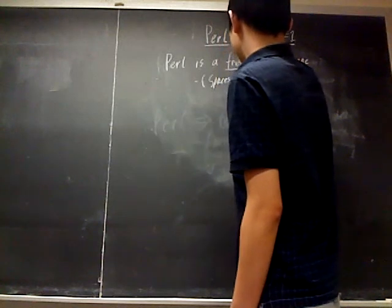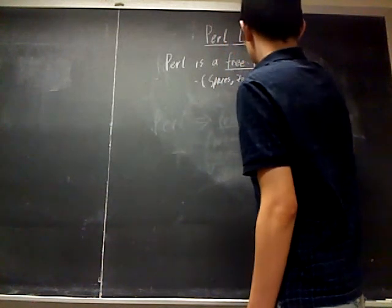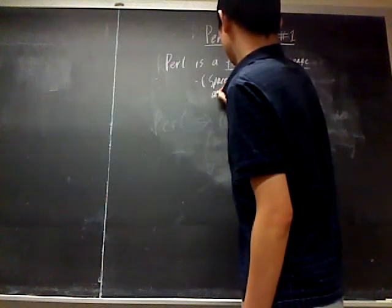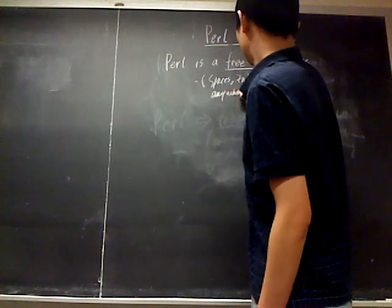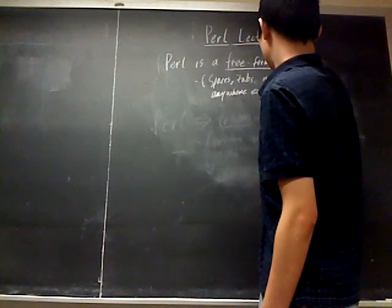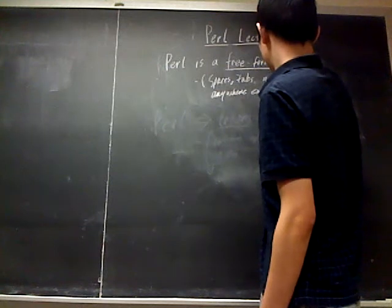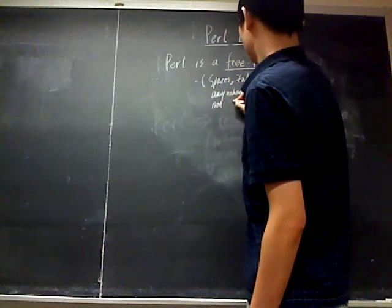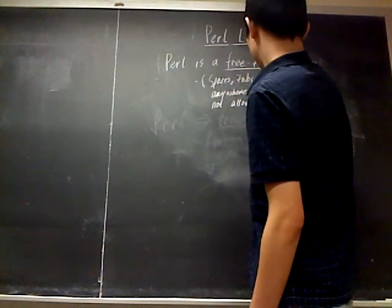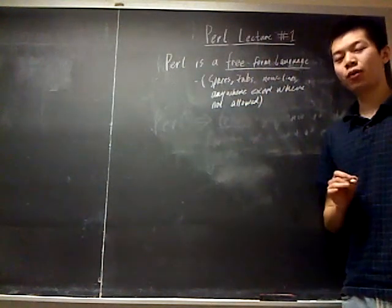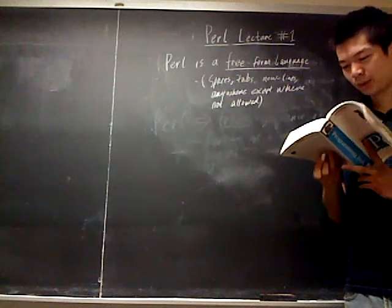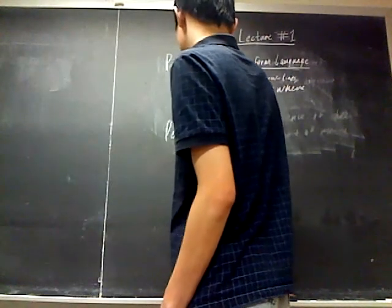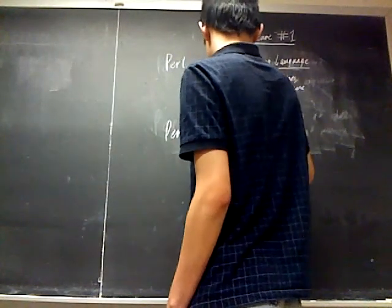So I'm writing down: spaces, tabs, new lines — anywhere — except where they're not allowed. Now, the next thing that we learned is that Perl consists of tokens.